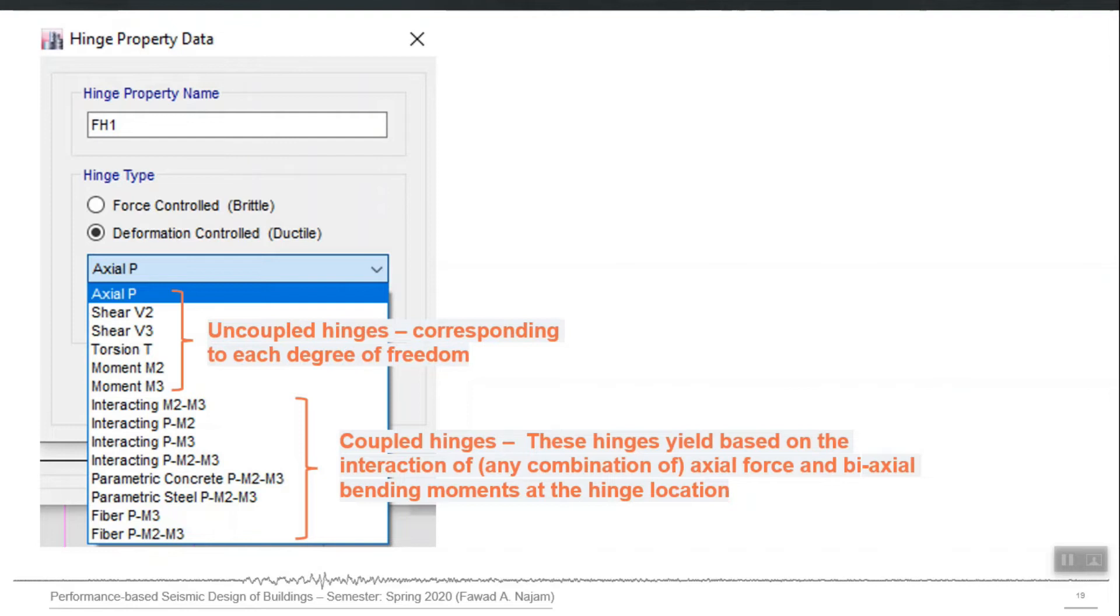Similarly, there can be many beams in our model which we will not define plastic hinges, like secondary beams, like some non-critical elements or some elements which we want to model or design as elastic elements. Some columns which we may want to model or design as elastic elements.